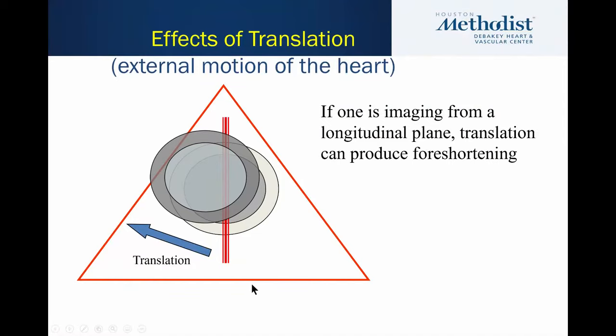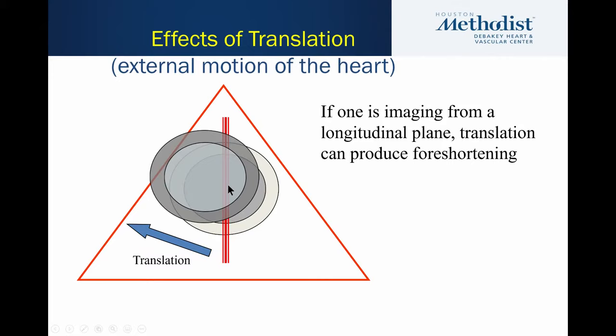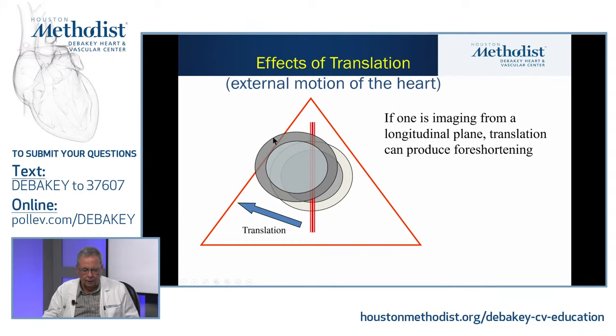Another real problem is when you have a lot of translation — the patient is breathing hard, or there is a pericardial effusion, or after cardiac surgery. The heart actually moves from diastole to systole. So in diastole you may be perfectly positioned, but by systole you're foreshortening. The best view that makes us aware of this problem is the short axis, where you can see that the circle of the ventricular cavity is moving out of the plane by end-systole.